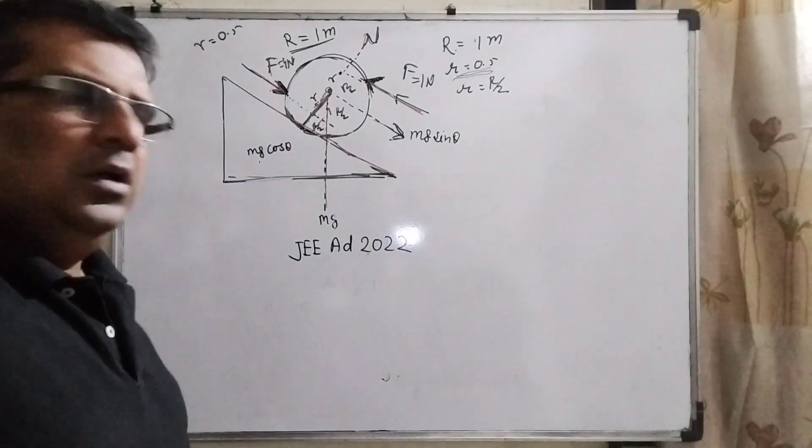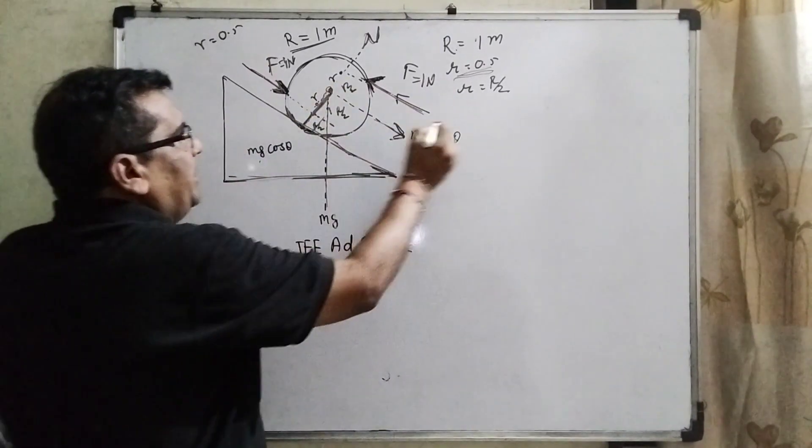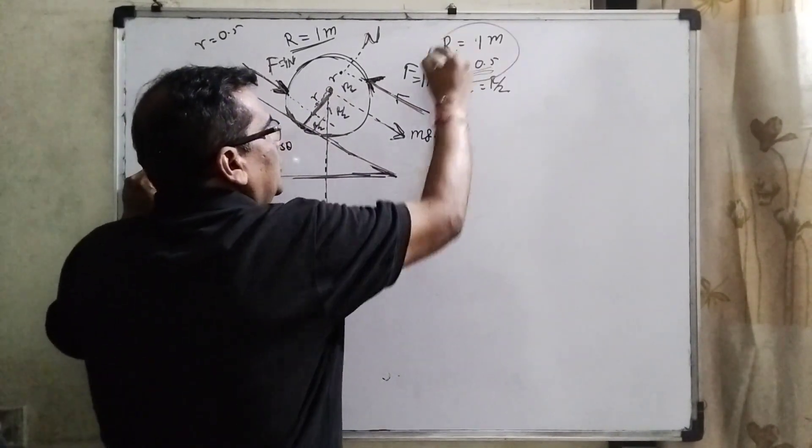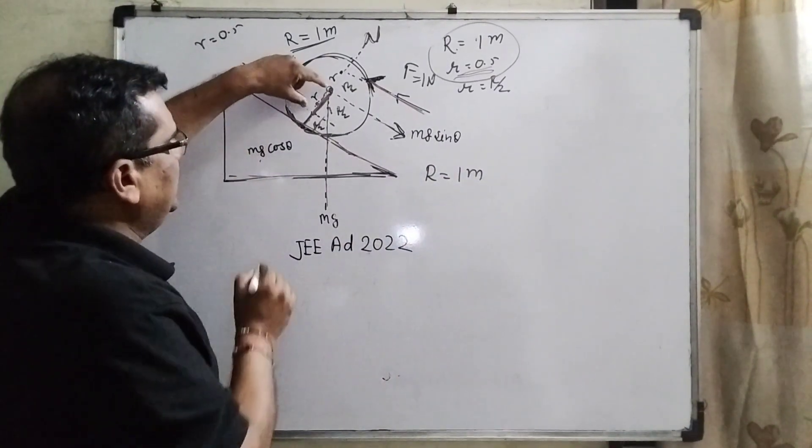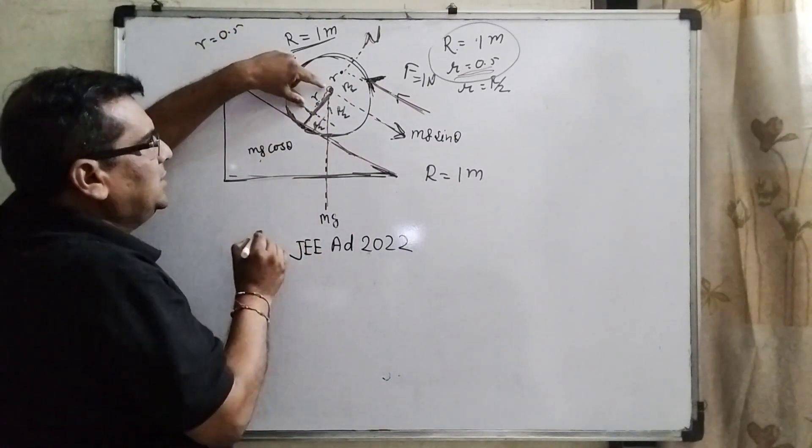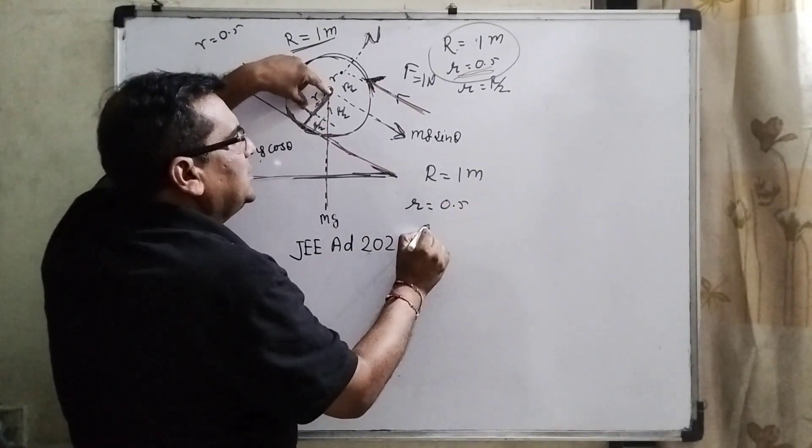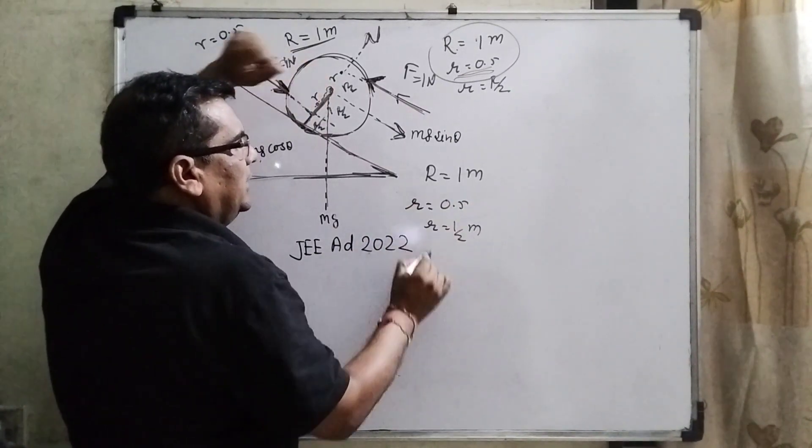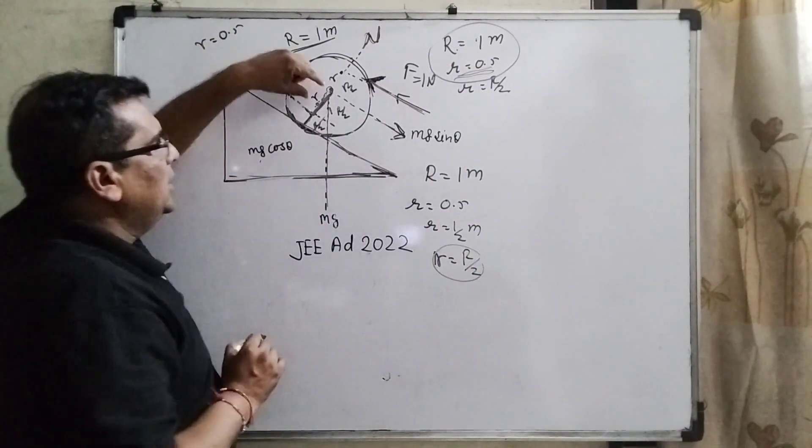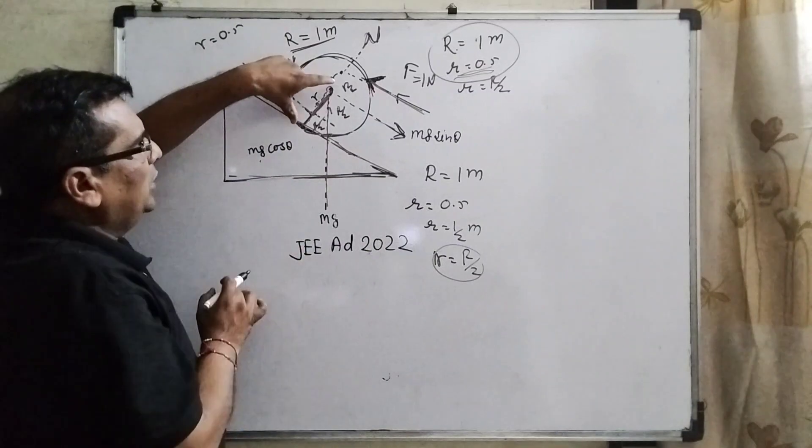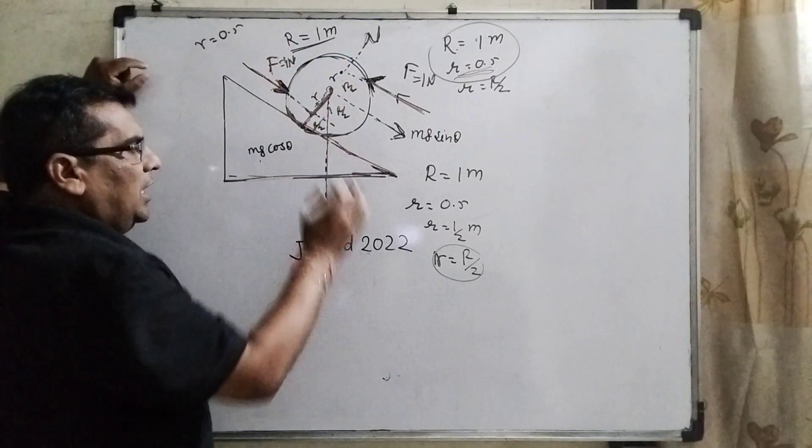And now come to the solution. You can see what is the relation between capital R and small r. You can see that here capital R is given as 1 meter. And this distance, where this force acts at distance r from the center is 0.5. It means r equal to 1 by 2 meter. Then small r equal to capital R by 2. So this distance is r by 2, whole distance is. So all distances are r by 2, r by 2 and this is r by 2.